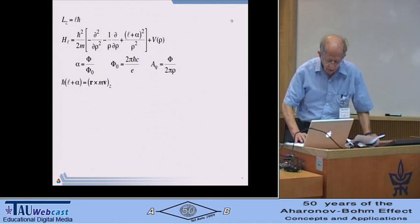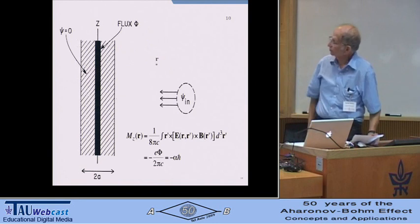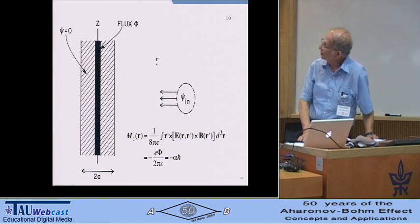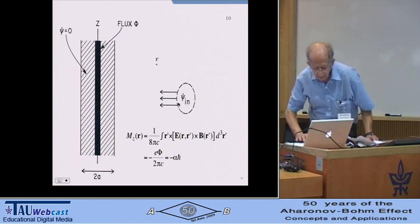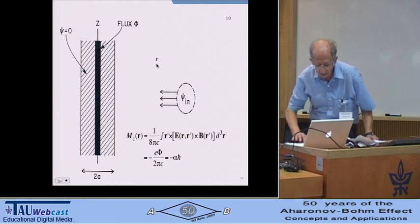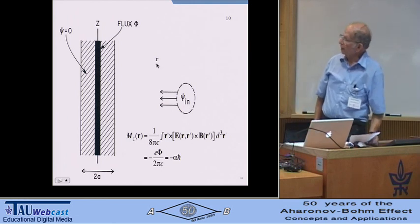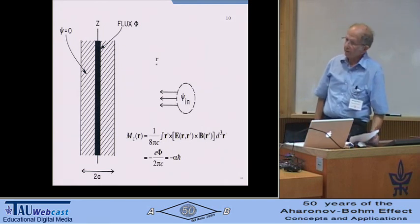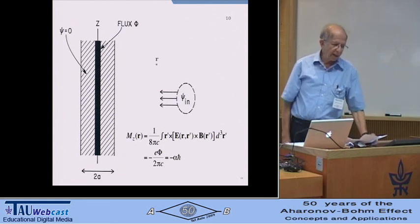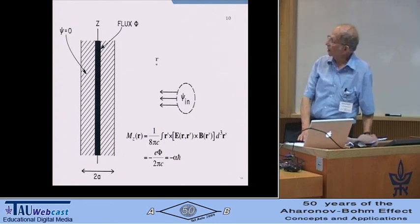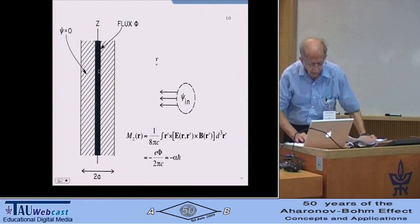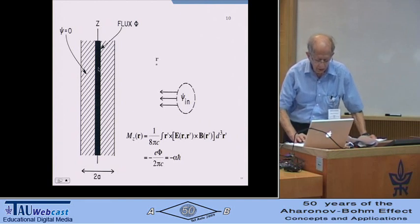But there is something else that's interesting about alpha, which is the following. Here is again the same picture, except that now I point out that here is a point r where the electron is at a particular instant. It is excluded from the region where the magnetic flux is, but the electron is the source of an electric field. The electric field is not excluded from the region where the magnetic flux resides. The electric field penetrates here into the flux in the solenoid, probably.